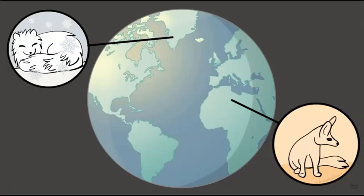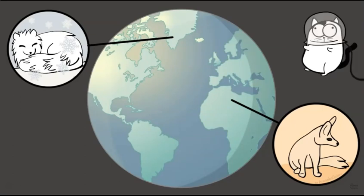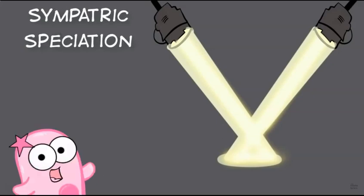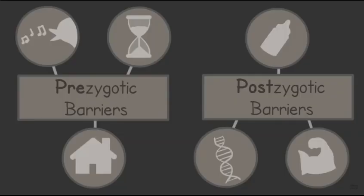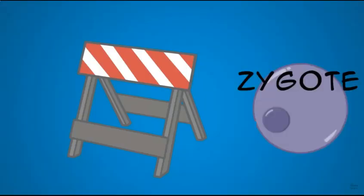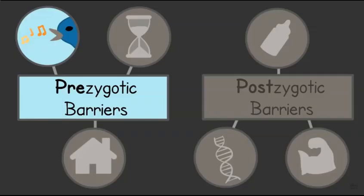Populations separated geographically can form different species. In sympatric speciation, the speciation happens in the same area, yet there's something else isolating them — and it can be a lot of things. Let's start with prezygotic barriers — barriers that occur before you can even make a zygote. A zygote is a fertilized egg, so a prezygotic barrier prevents fertilization from happening. The first prezygotic barrier is behavioral isolation: species can have different behaviors, even very slight differences, that can isolate them.